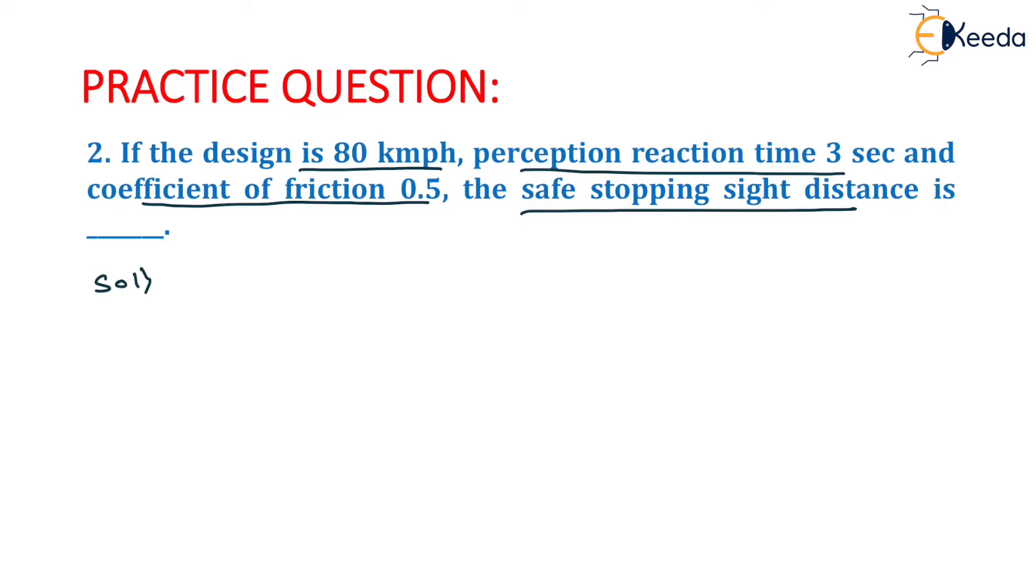We know that the stopping sight distance equals 0.278 V times TR plus V squared upon 254 into F plus or minus S.